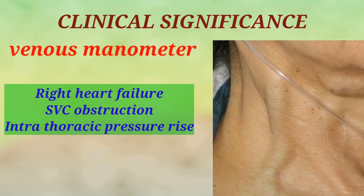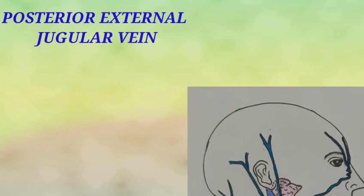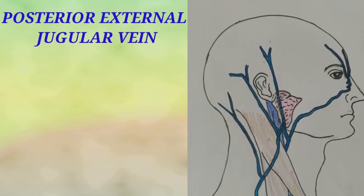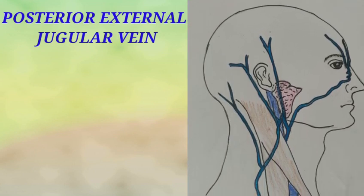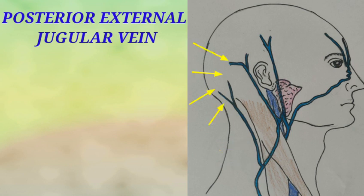The external jugular vein is also a useful venous manometer. When the vein is engorged, we can suspect conditions like right heart failure, obstruction to the superior vena cava due to any neoplasm, or any raised intrathoracic pressure. The posterior external jugular vein, which is a tributary of the external jugular vein, begins in the occipital region of the scalp and joins the external jugular vein in its middle part posteriorly. It drains the skin and the superficial muscles lying posterior and superior to the neck.